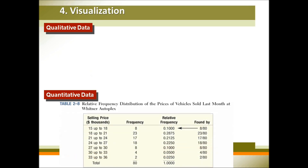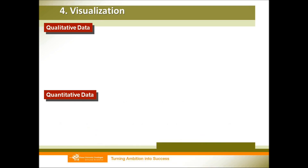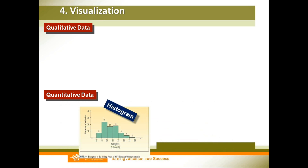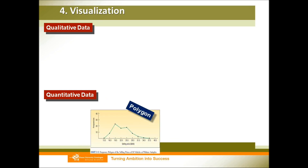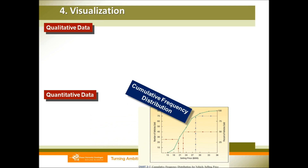For quantitative data, we can use a relative frequency distribution — this is also what we call grouped data, where each class has a range and a frequency. Besides that, we can also use a histogram, which is different from the bar chart: in a histogram, all bars represent continuous numbers and can be connected to each other. We can also use a polygon — note that the polygon never floats in the air. We can also use a cumulative frequency distribution, which is based on summing the frequencies of all previous classes.